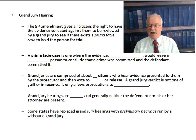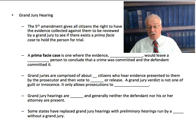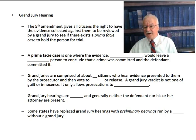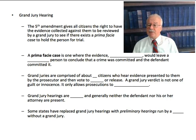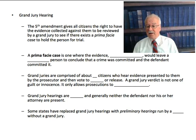Grand juries are comprised of 23 citizens who hear evidence presented to them by the prosecutor, and then they vote to indict or release. A grand jury verdict is not one of guilt or innocence — it only allows the prosecution to proceed with the case to a trial. Remember, the grand jury hearing is a protection in the Constitution that allows ordinary citizens to screen the actions of the police and the prosecutors to ensure that they had good reason to arrest and hold you for trial. It's a protection against the abuse by the government.